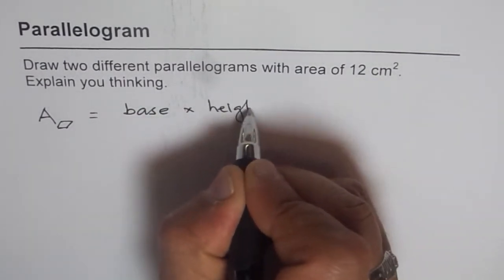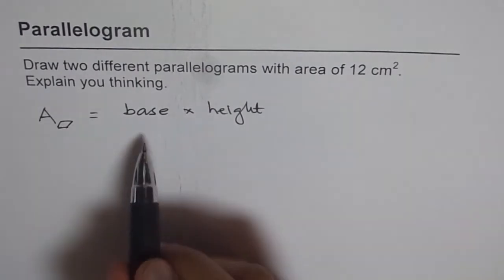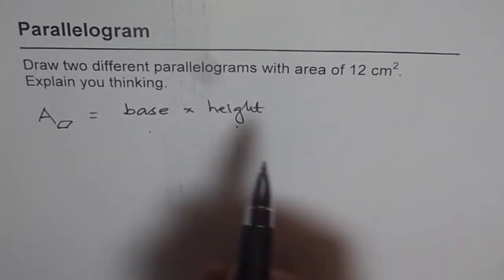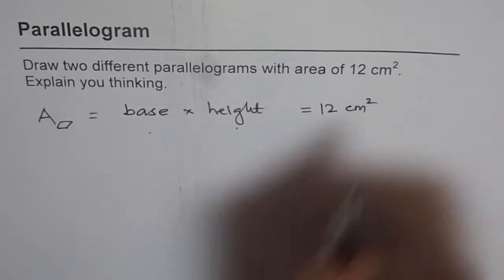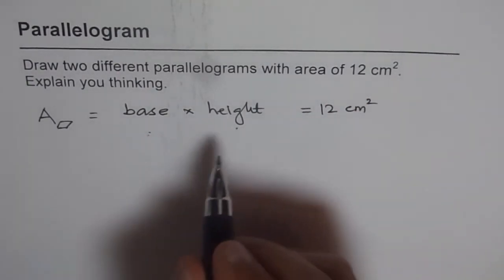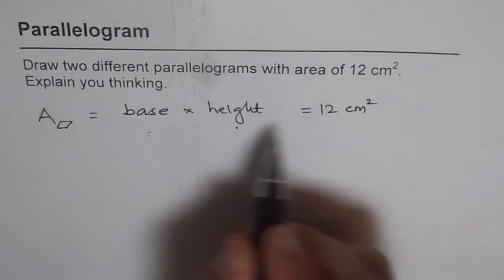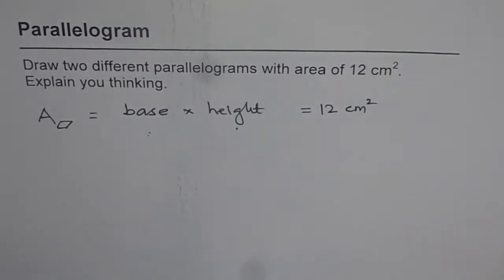That is what it is, right? So that means when I multiply base and height, I should get 12. Since we are given 12 cm² as the area, that means any two numbers when you multiply and if they give you 12, that should be your answer.